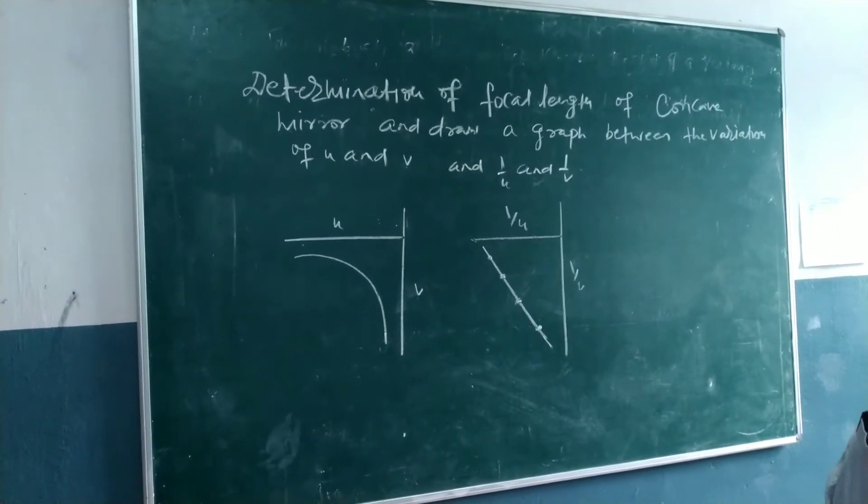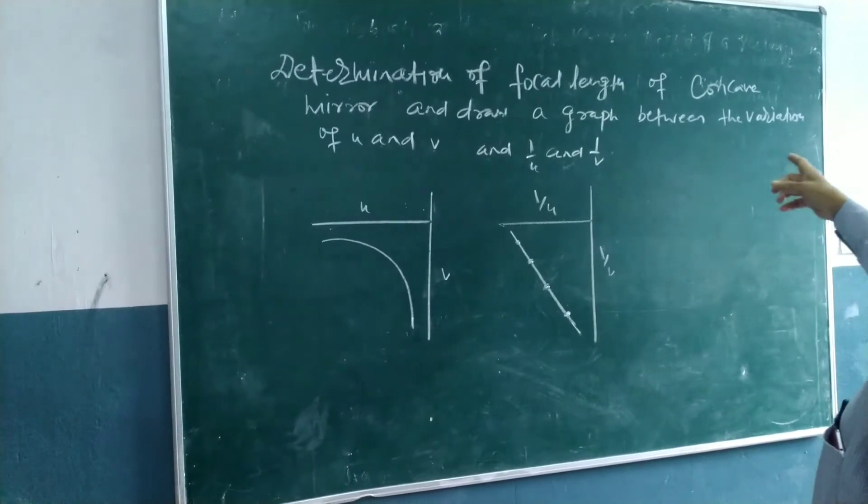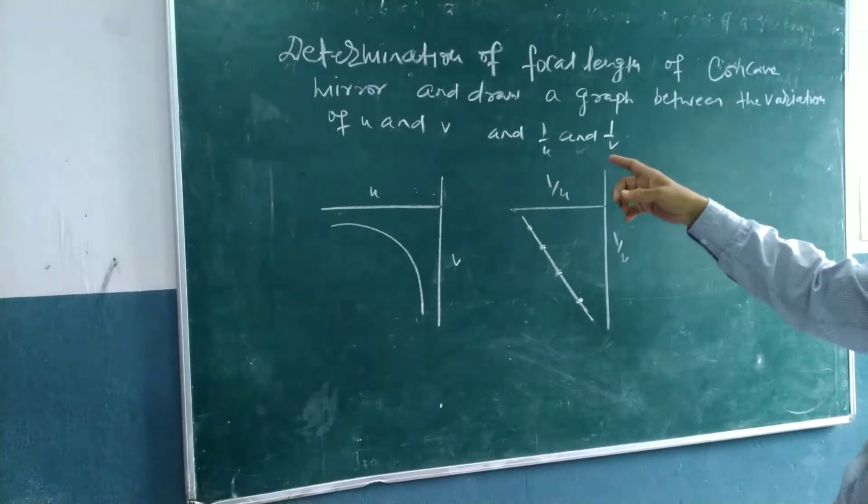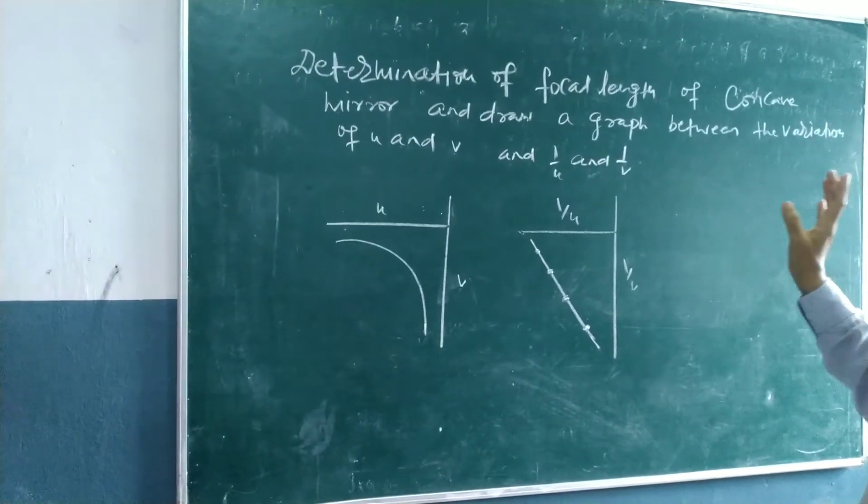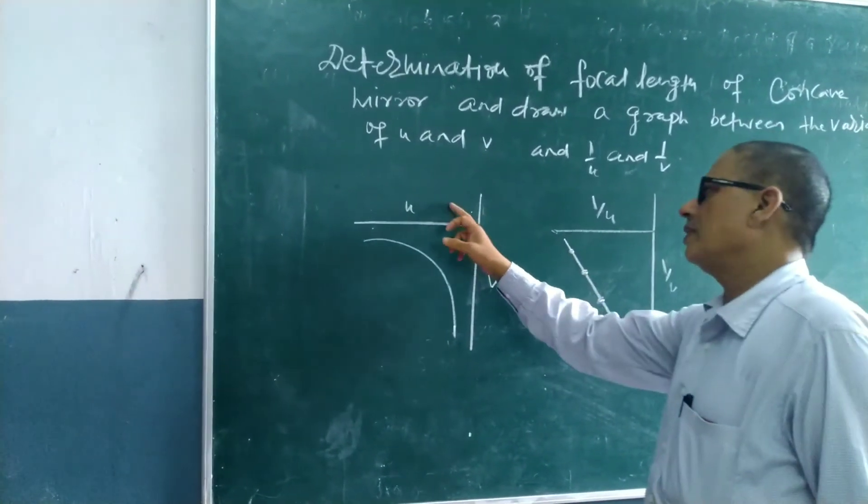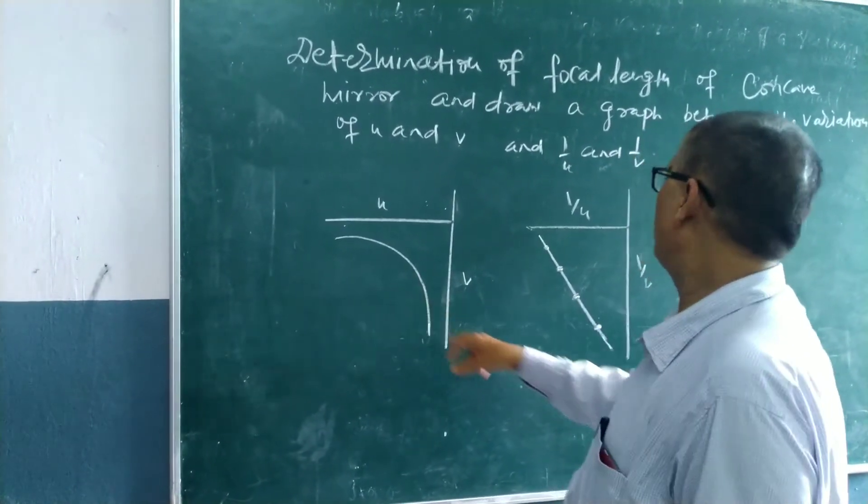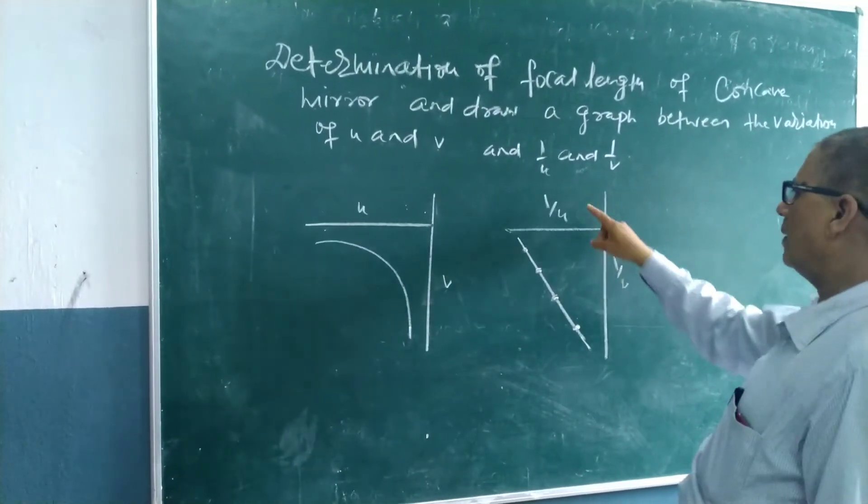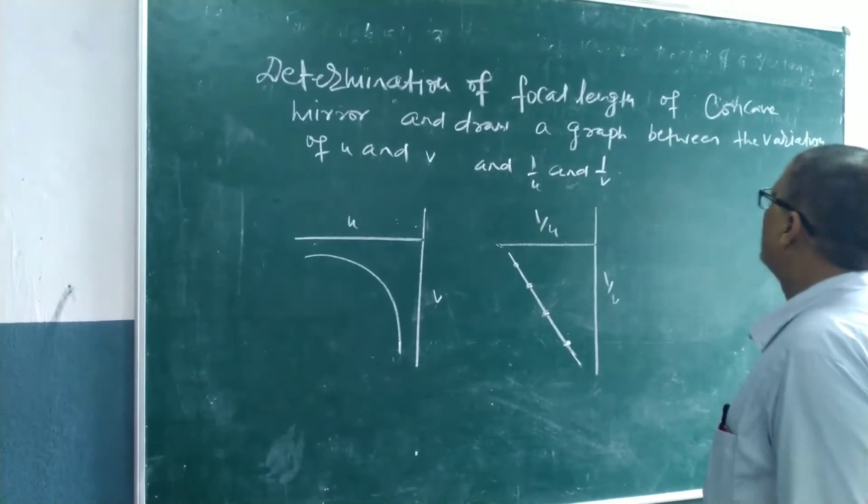Today we are going to obtain the focal length of concave mirror and draw a graph between the variation of u and v and also between one by u and one by v. The graph between u and v and one by v and one by v we get in this form.